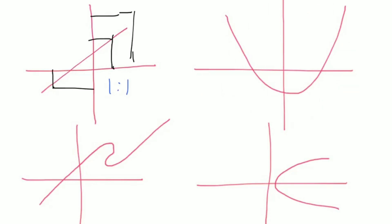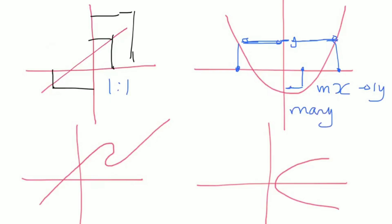Looking at the top-right graph, for a given x value, it only gives one y value. However, looking at a particular y value, it can be reached from two separate x values. So many x's generate one y value, meaning this graph is a many-to-one.